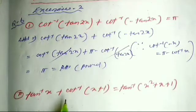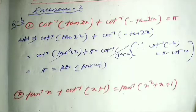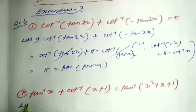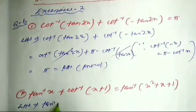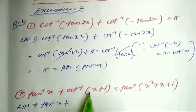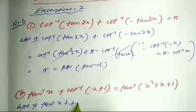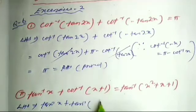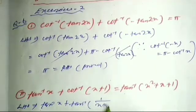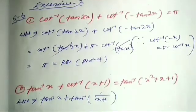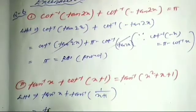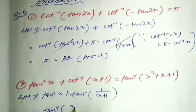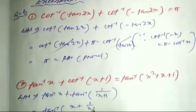Next question: tan⁻¹(x) + tan⁻¹(x+1) is equal to tan⁻¹(x² + x + 1). LHS is tan⁻¹(x) + tan⁻¹(x+1). Now, the formula for tan⁻¹(x) + tan⁻¹(y) equals tan⁻¹((x + y) divided by (1 - xy)).